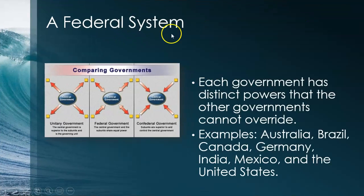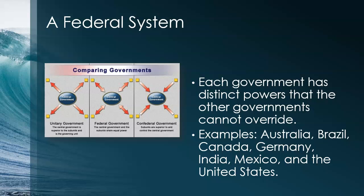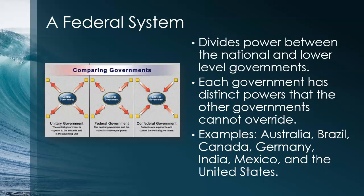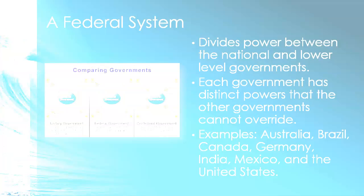Here is how the federal system works. Each government has distinct powers that the other governments cannot override. The federal government can't create a national driver's license law — that's up to the states. Power is divided between the national and the lower-level governments, so it's very specific that the federal government can do certain things and the state and local governments can do others.